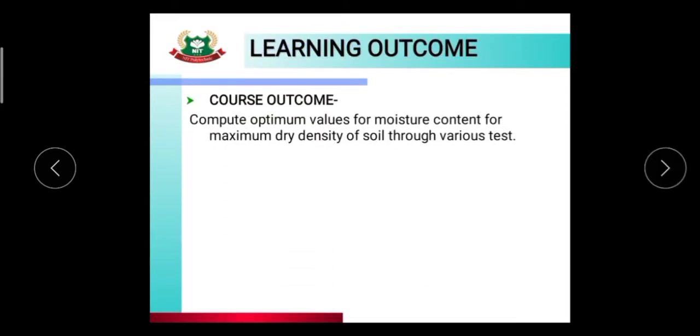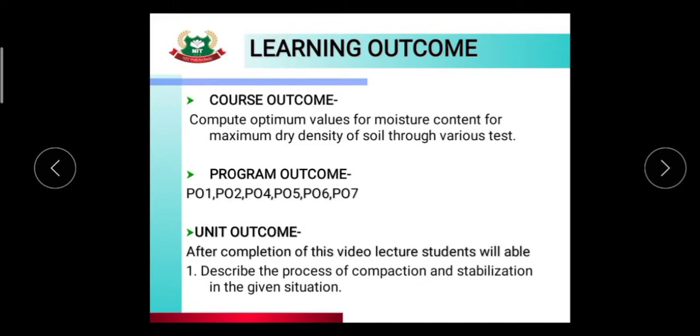The course outcome: compute optimum values for moisture content for maximum dry density of soil through various tests. Program outcomes: P01, P02, P04, P05, P06, and P07. Unit outcome: after completion of this video lecture, students will be able to describe the process of compaction and stabilization in a given situation.